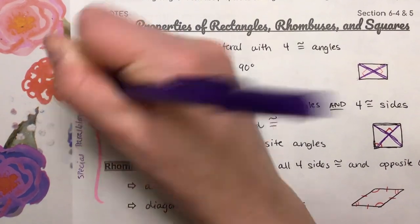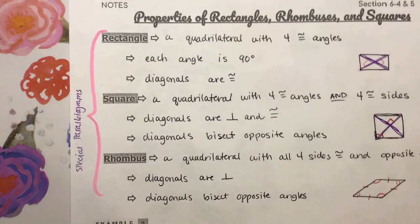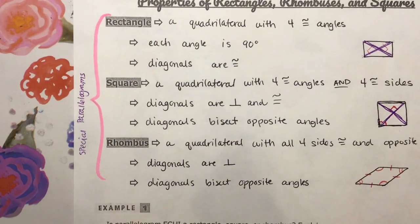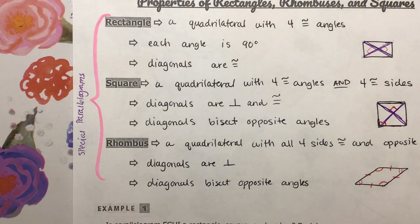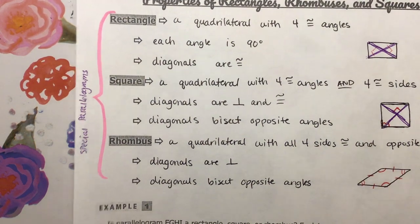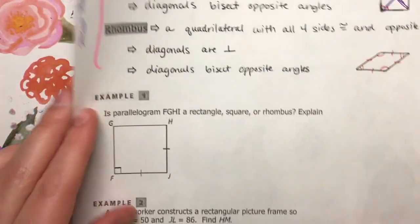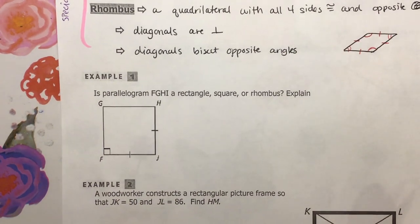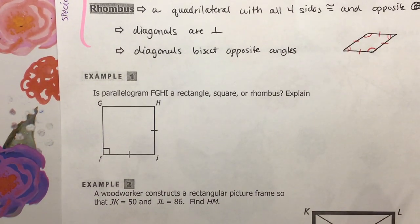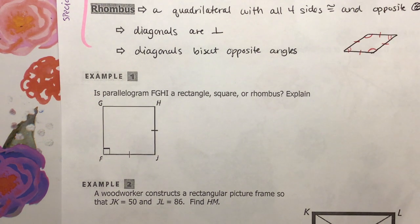That means that they have all the properties of parallelograms that we've already covered in the previous sections of this chapter. So let's look at example one. It says: is parallelogram FGHI a rectangle, square, or rhombus? Explain.